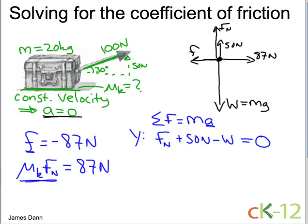We know the weight is mg, and if we plug in things, the mass is 20 kilograms, the acceleration of gravity on Earth, 10 meters per second squared, that equals 200 newtons. So let's plug that in here.